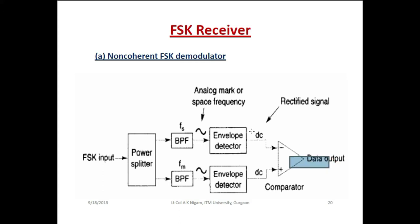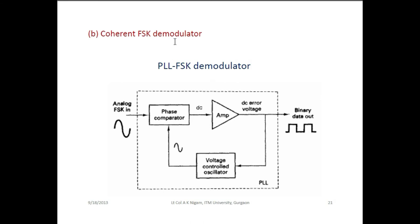The comparator is able to compare the two waves, and according to that, digital data is obtained from the comparator after rectifying the signal. Then in the coherent FSK demodulator, the phase-locked loop concept is used for the demodulation purpose. The components of the PLL are the phase comparator, amplifier, and voltage-controlled oscillator. Whatever analog FSK signal is given in, the phase comparator compares the phase and generates a magnitude in the form of a DC signal, which is given to the amplifier. The output of the amplifier is in the form of logic 0 and logic 1 — that is the binary data output.